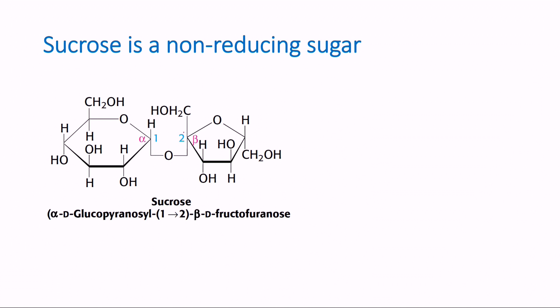One means the first carbon of glucose. The first carbon of glucose is the anomeric carbon. The second carbon of fructose is the anomeric carbon in fructose. Here, anomeric carbons are taking part in formation of the glycosidic bond. So there is no free aldehyde or ketone group, and that is why sucrose is non-reducing.